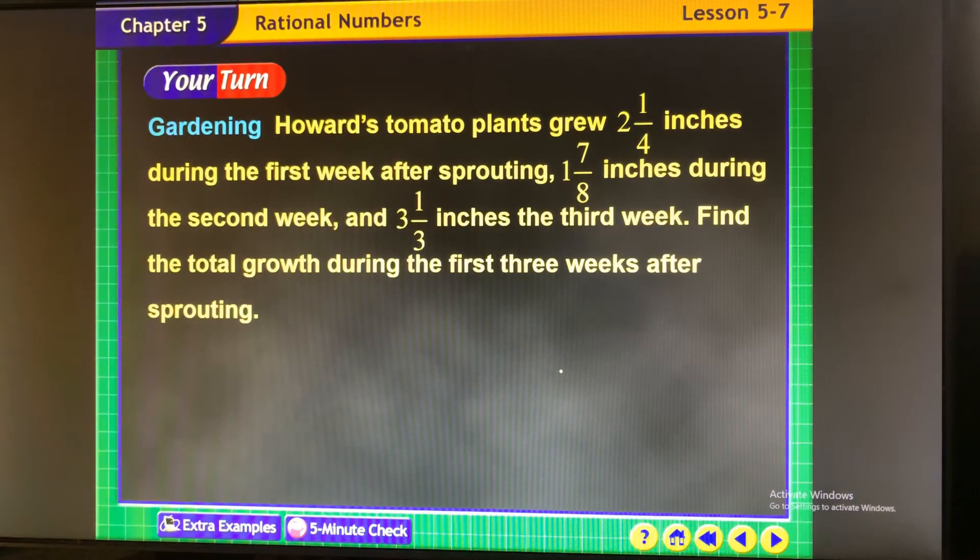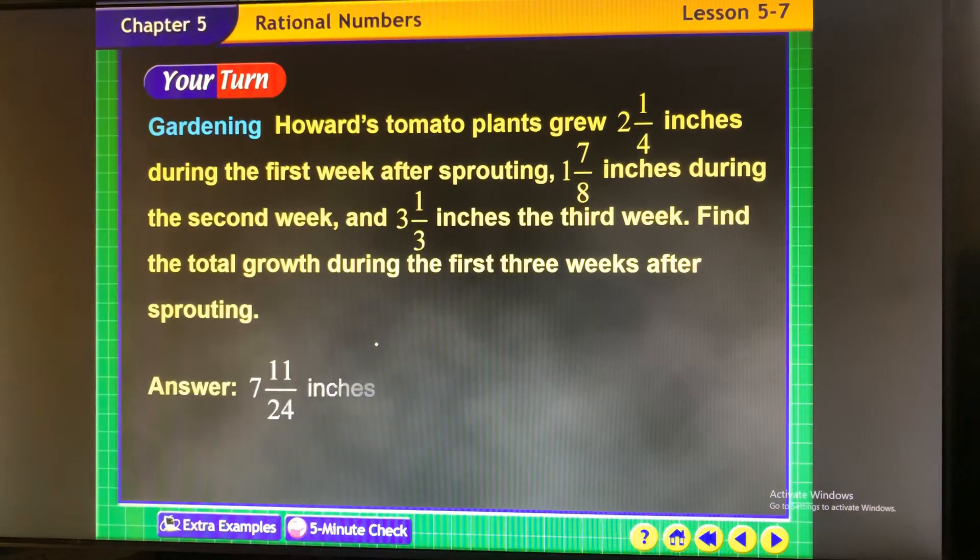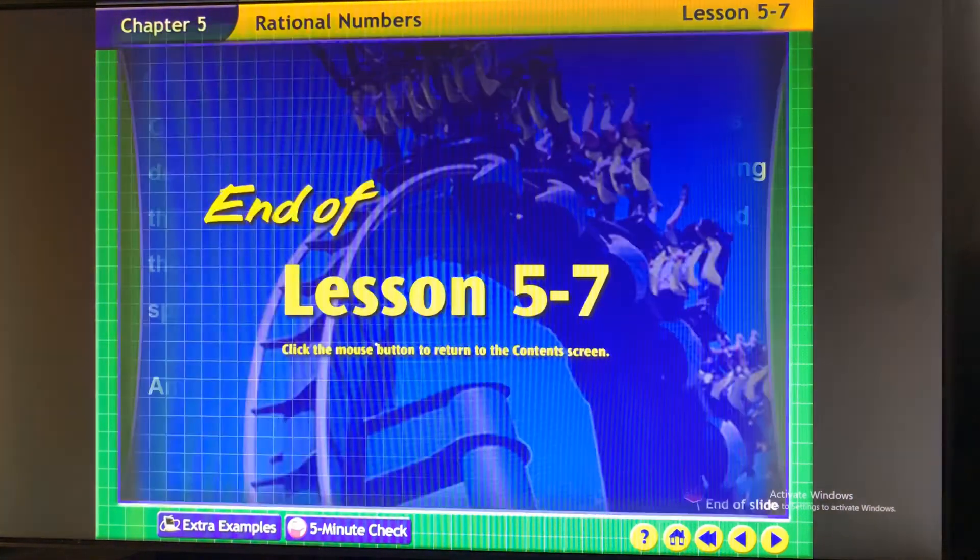You're doing the same thing here. 2 1⁄4 plus 1 7⁄8 plus 3 1⁄3. Put all those together. Make sure you find the common denominator of 3, 8, and 4, which would be, what, 24? And then go forward with that. Yay!